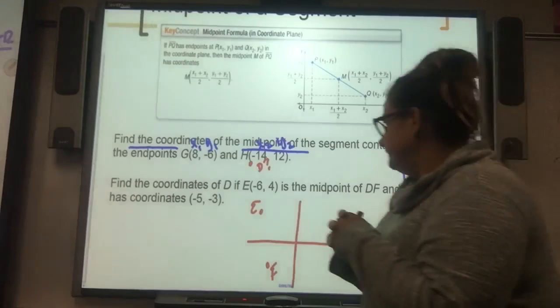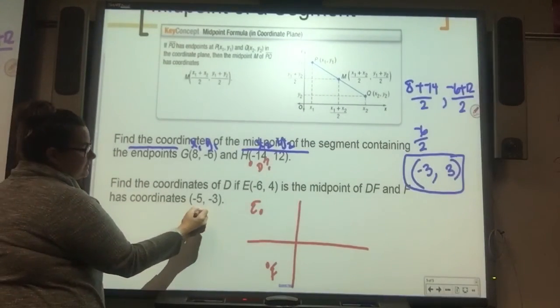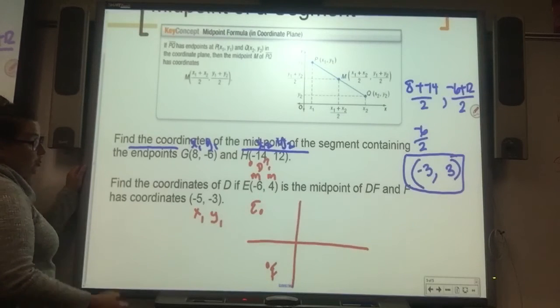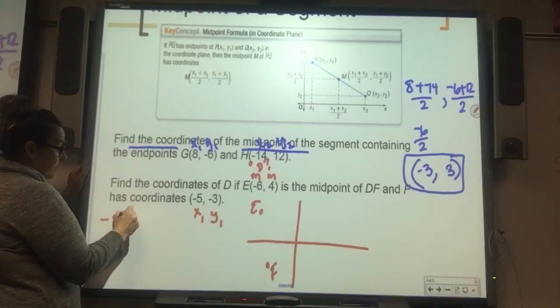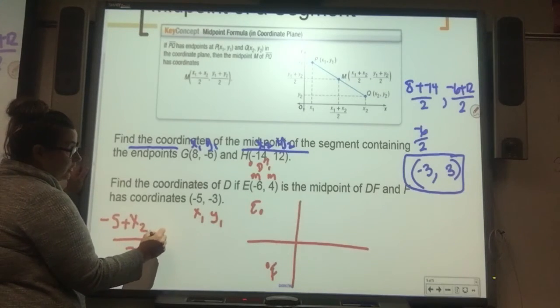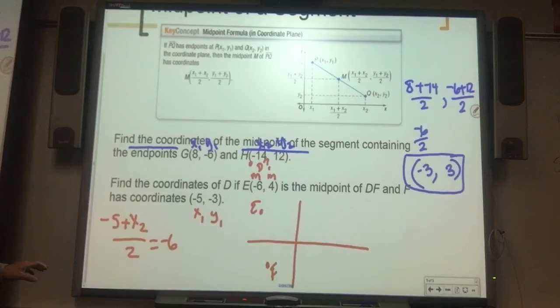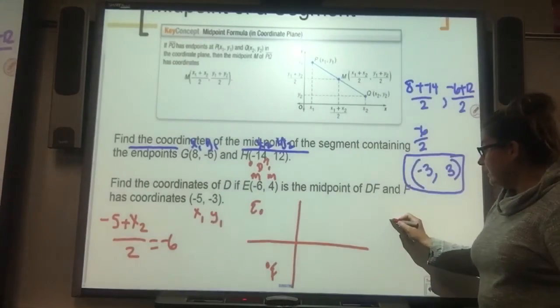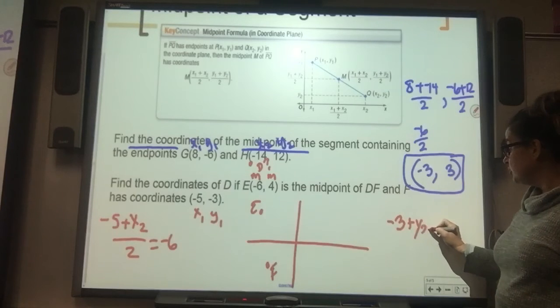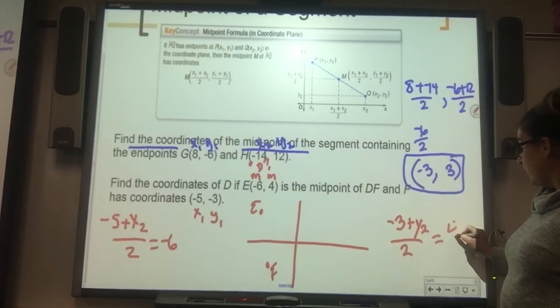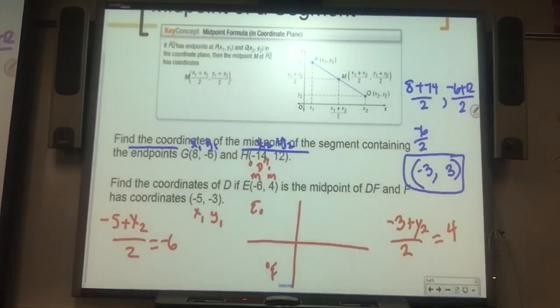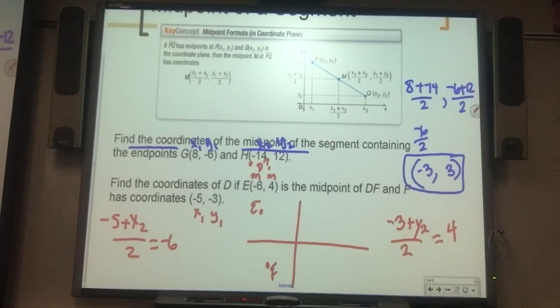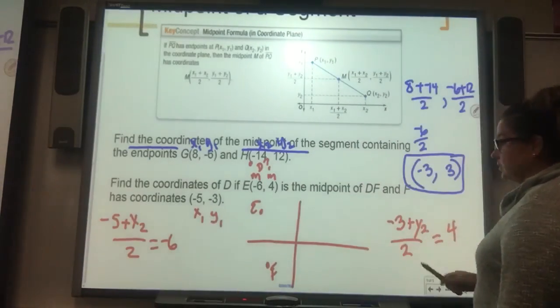When I look at the formula, I know that this is x sub 1, this is y sub 1. These are the midpoints. So I'm going to say negative 5 plus x sub 2 divided by 2 is negative 6. Because this is the midpoint x value. And then for the y, I'm going to say that negative 3 plus y sub 2 divided by 2 is 4. Negative 6, 4 is our end point. Negative 5, negative 3 is our first ordered pair. And we want to find the second ordered pair.